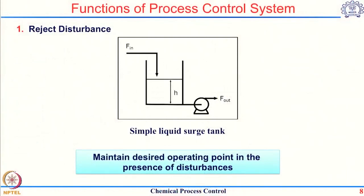Most control systems you would see have a primary job of rejecting the effect of a disturbance. Sometimes a control system is also implemented to stabilize an unstable operating point. Before going forward, let me explain what I mean by stability.